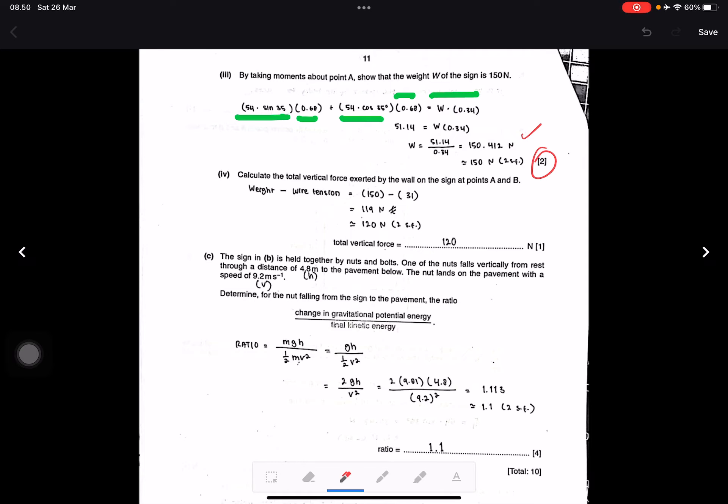Question iv: Calculate the total vertical force exerted by the wall on the sign at points A and B. Weight is 150 and wire tension vertical is 31, so we get 119. In two significant figures, this is 120.